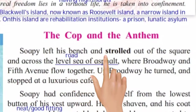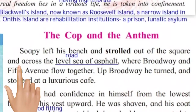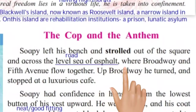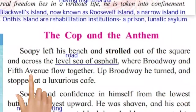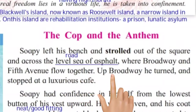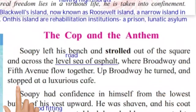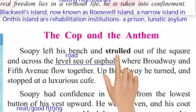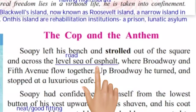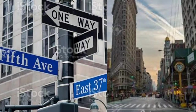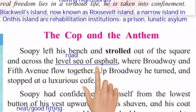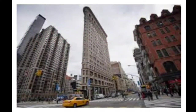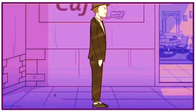Soapy left his bench and strolled out of the square and across the level sea of asphalt where Broadway and Fifth Avenue flowed together. Up Broadway he turned and stopped at a luxurious cafe. Story ke start mein Soapy bench par baitha hua hai. Vo bench chhodkar aahista uthta hai aur sea of asphalt ke us paar jaata hai jahaan Broadway aur Fifth Avenue road hai. Vo road ke us paar ek shandar cafe ke paas rukta hai.